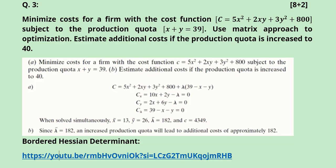We have to find the various critical values: x-bar, y-bar, and lambda. These can be easily found by solving the three simultaneous equations. We can also interpret these values. The cost is found — this is the optimized value, that is the minimized value of the cost function. This can be found by substituting the values of x and y into the given cost function. Solving this, we get C equal to 4,349. These are the critical values, and this is the optimum value.